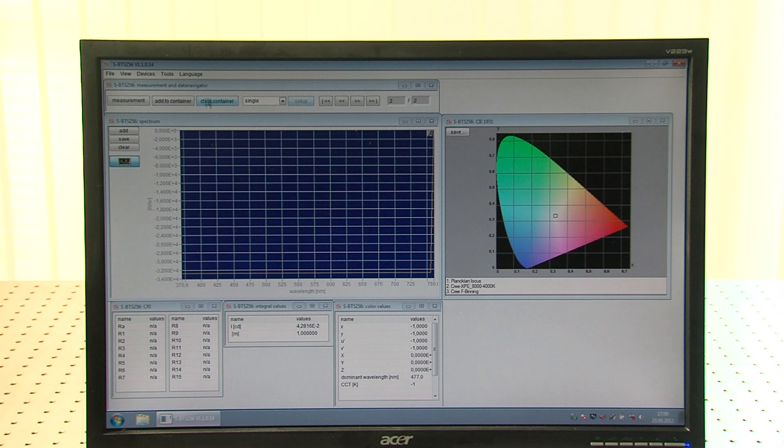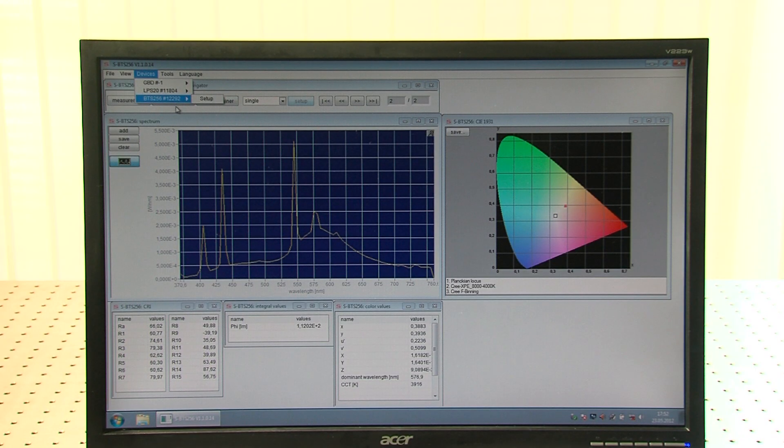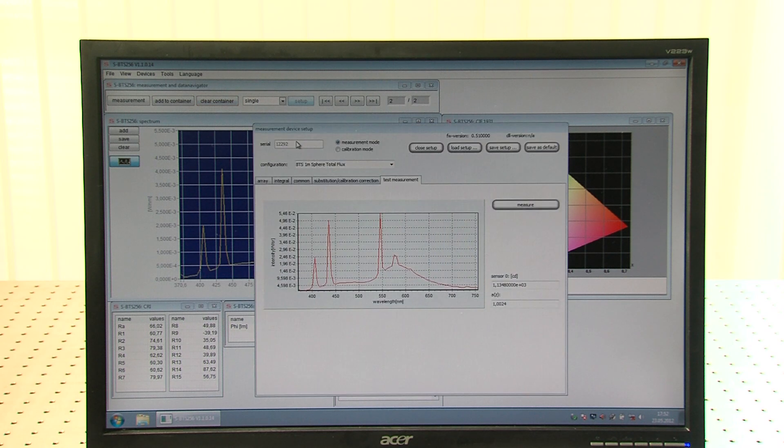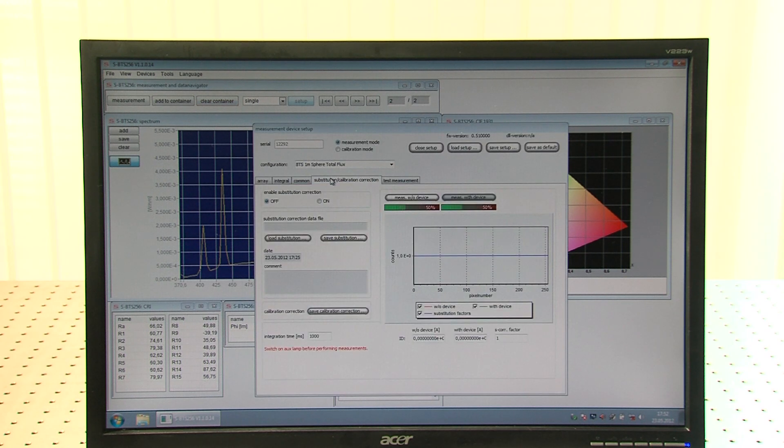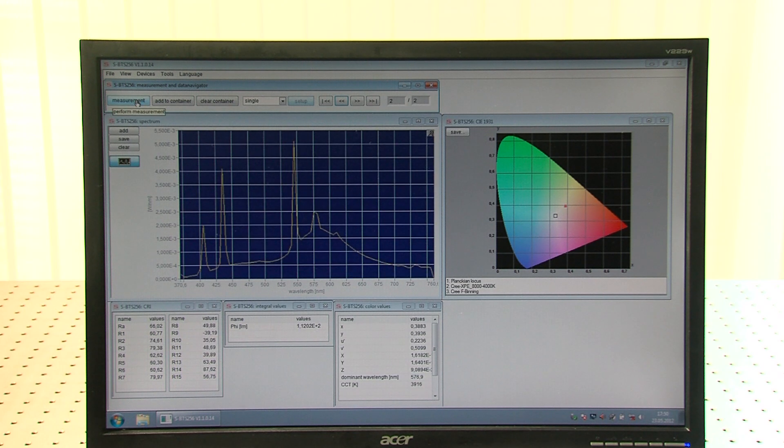Select the BTS-256 with external integrating sphere in the configuration area of the desktop. The software provides a routine for correction of self-absorption errors using the auxiliary lamp. In single measurement mode, a single reading is made once the test source has stabilized. Measured values are displayed on the desktop in the appropriate windows.